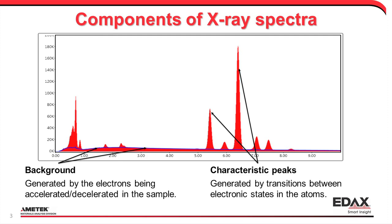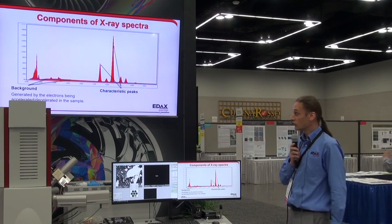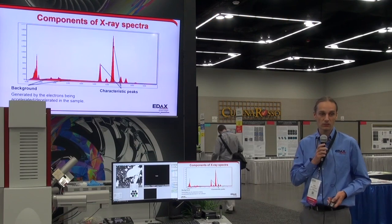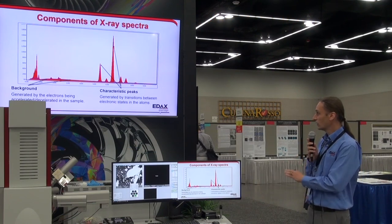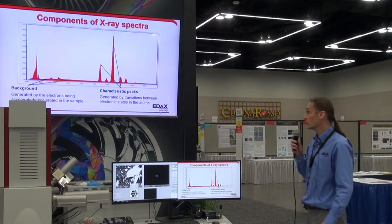If we look at a spectrum, we have a background and we have some characteristic peaks. Most of the time we only care about the characteristic peaks — what elements are in the sample. But the background holds a lot of information as well. The background is generated by electrons being slowed down or accelerated as they move through the sample and emitting radiation, whereas the characteristic peaks are generated by transitions between electronic states within the atoms.